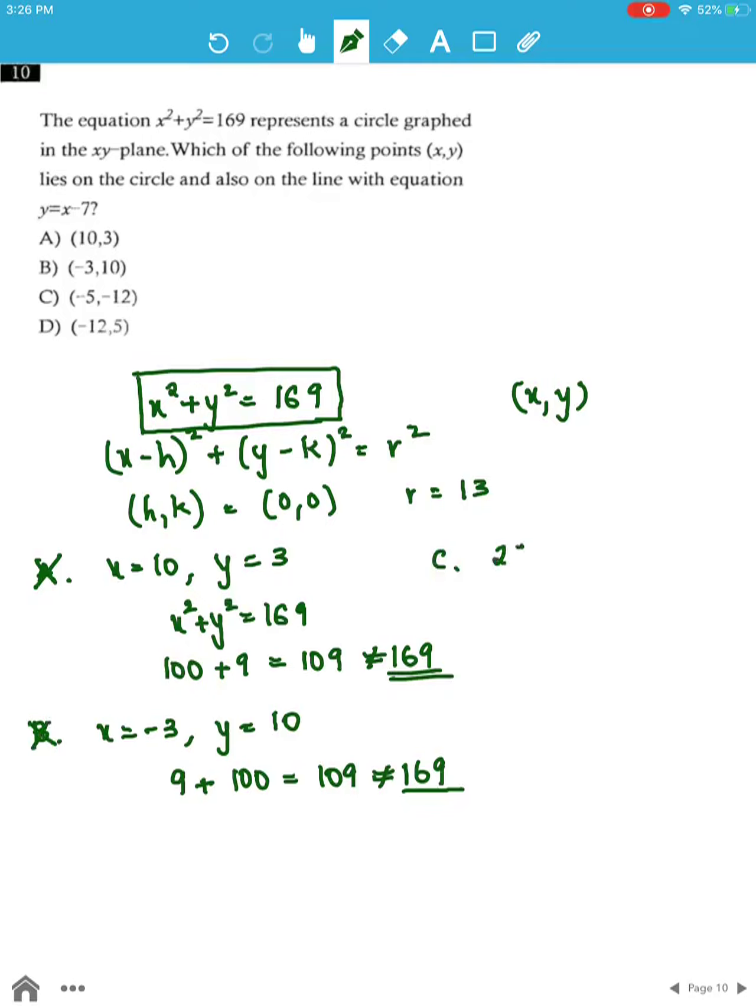Option C gives us 25 plus 144 which equals 169. This point also has to satisfy the equation y equals x minus 7, because the problem states this point lies on this line as well.